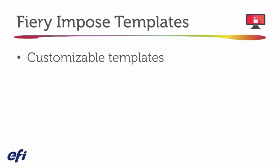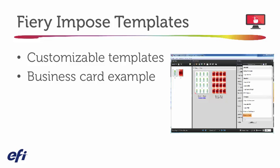A great example of how Fiery Impose can save your setup time is imposing a business card. The Gang Up Imposition Type is one of the standard templates you can begin with, but you can add additional settings for gutters or any page layout you need. Your initial Impose setup can take 15 steps or more to identify everything you need. When you're done, you can save that as a preset, which saves you up to 80% or more in steps going forward.